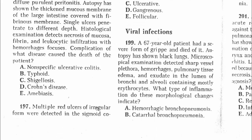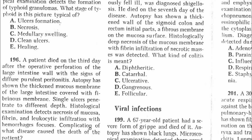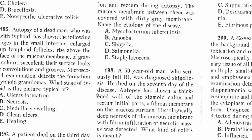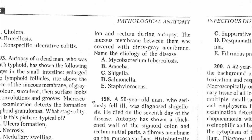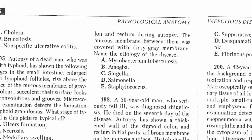Question 197: Multiple red ulcers of irregular form were detected in the sigmoid colon, which is also part of the large intestine. Think of shigellosis or Shigella. The answer is C — Shigella.